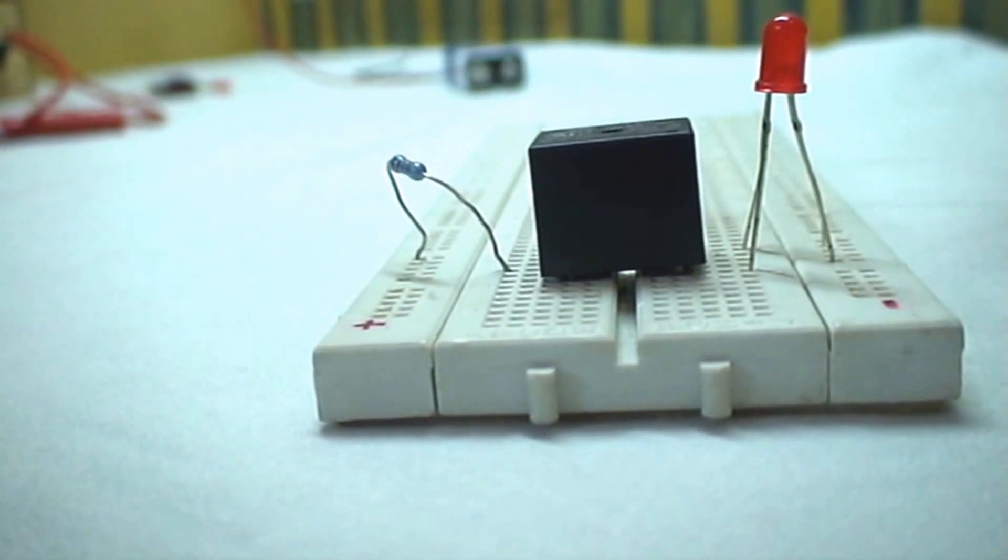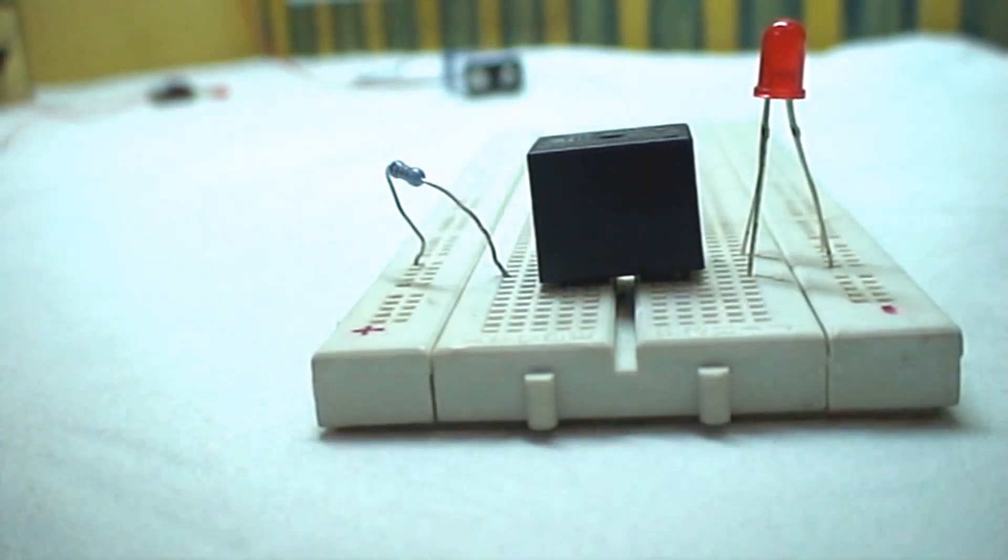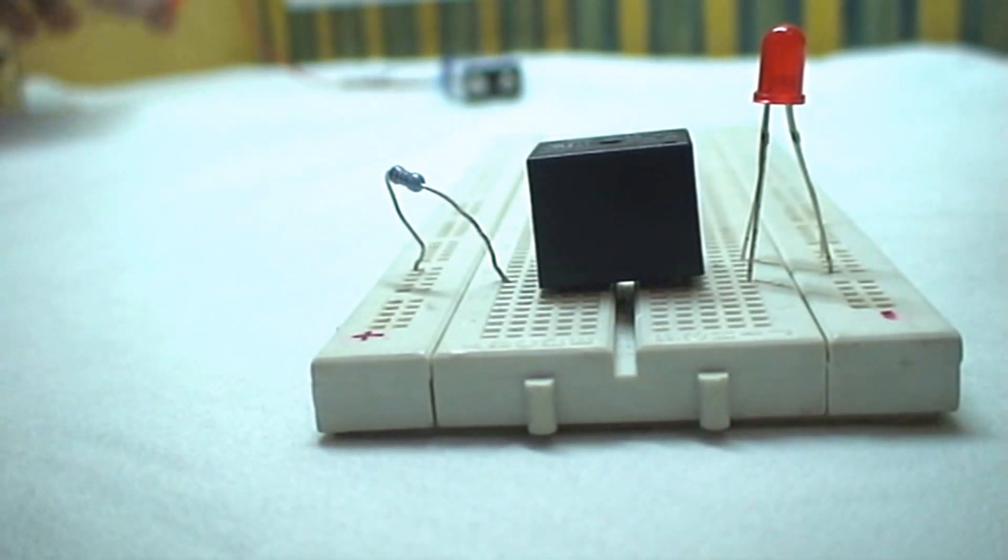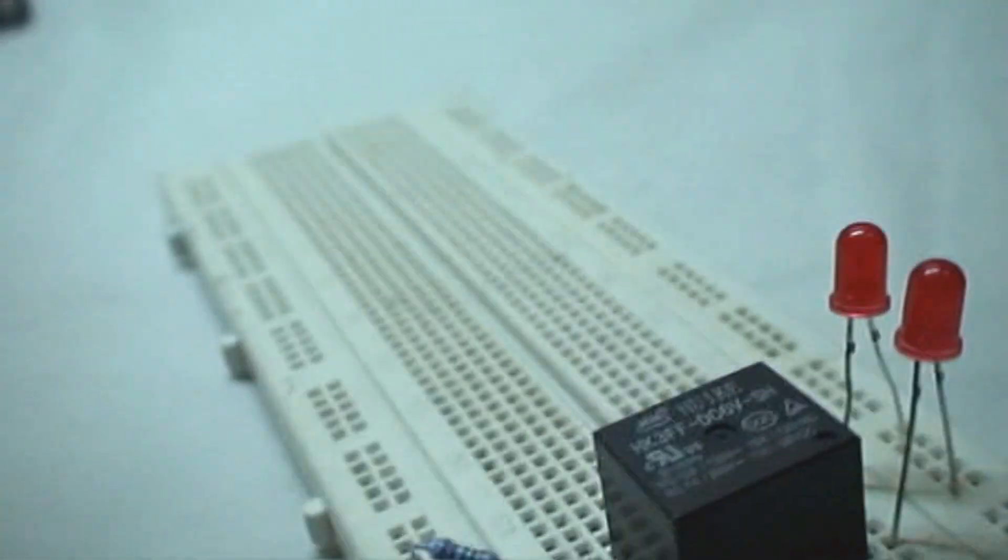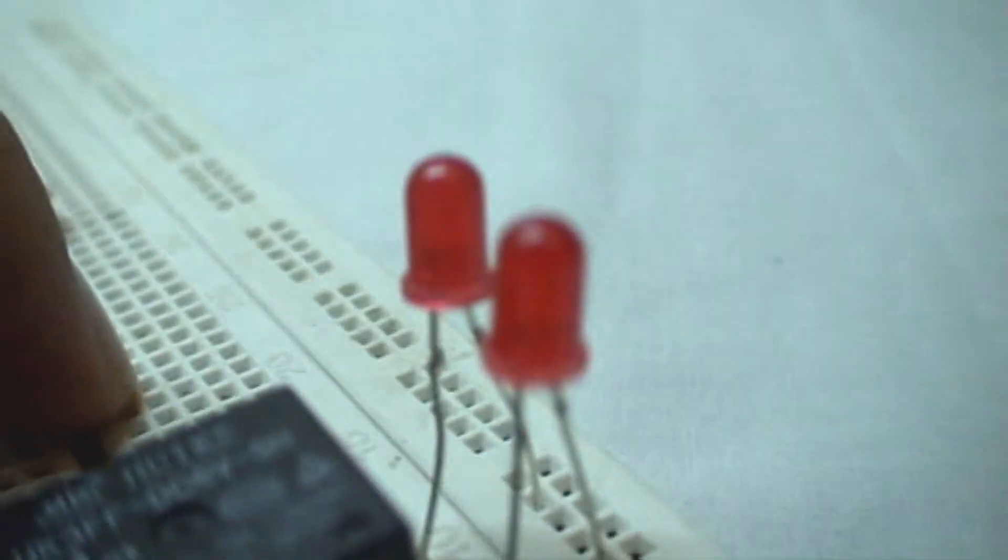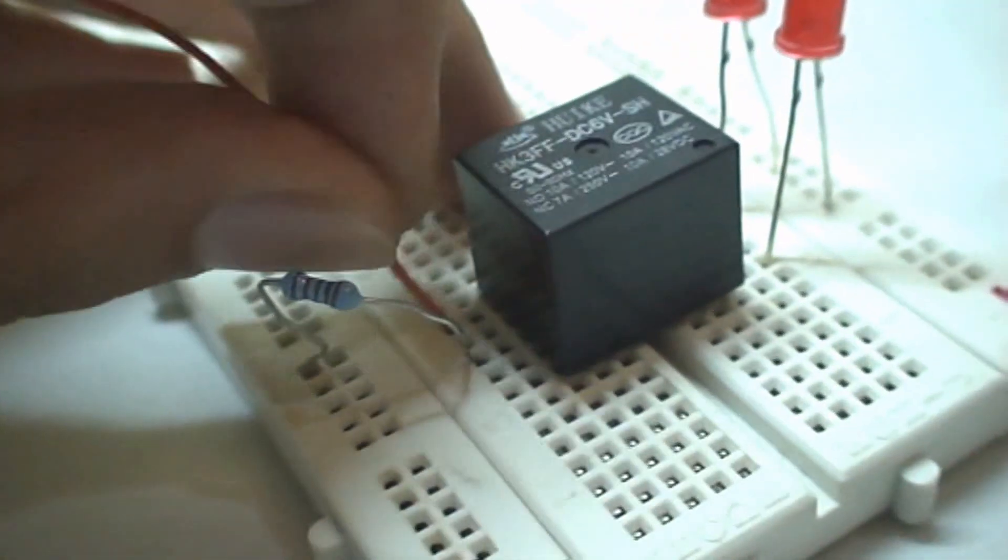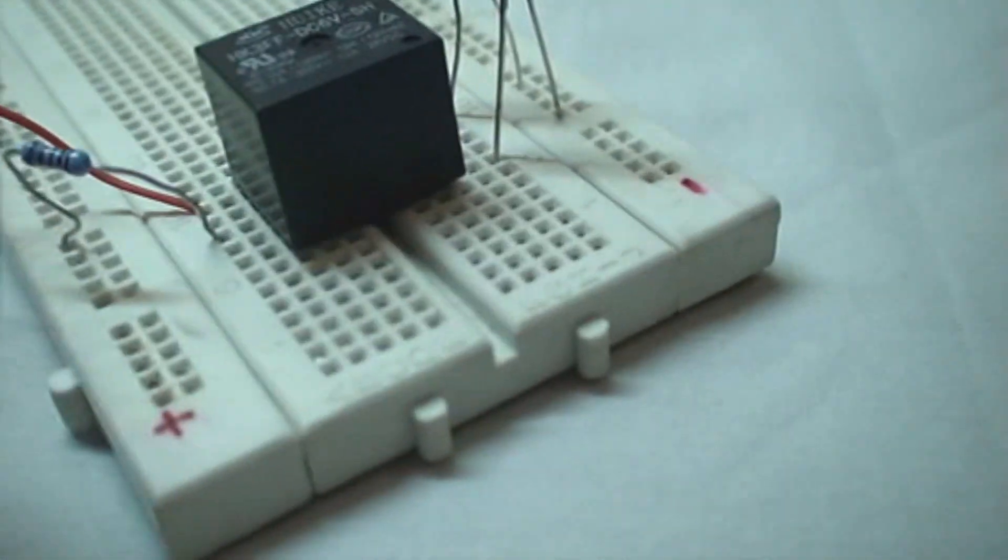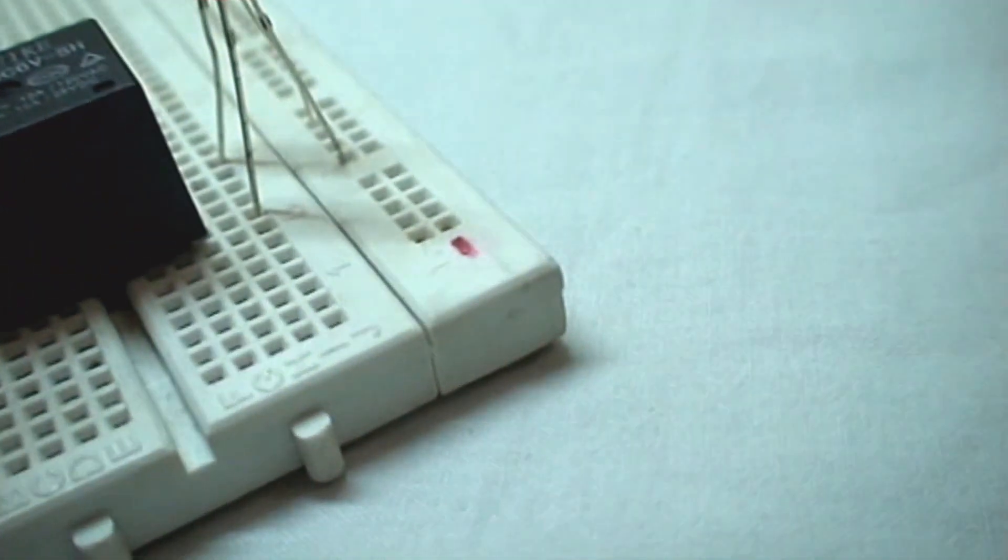Now we connect the 6V power supply. I have already connected the positive of the 6V power supply to the positive rail. The other part I will connect to one of the coil terminals, and the negative of the 6V power supply to the other coil terminal.